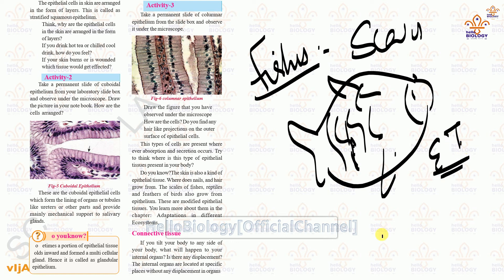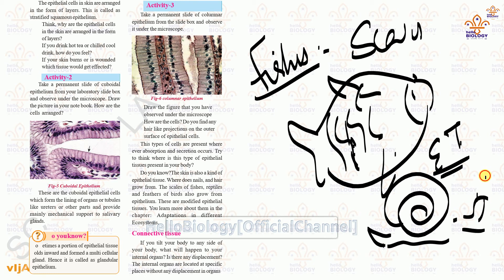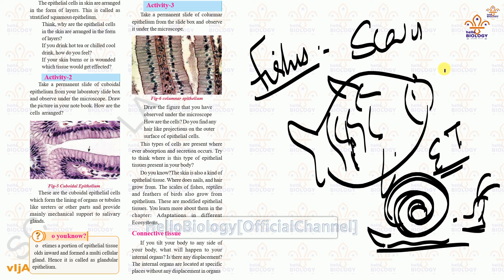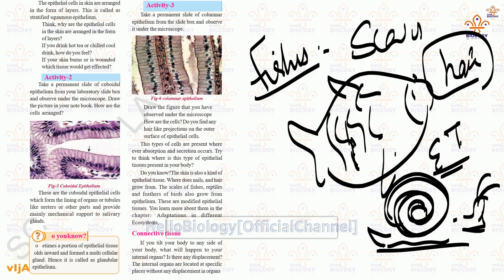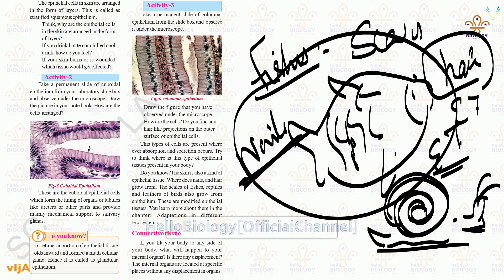Snails have a shell that is also made up of epithelial tissues. Human and animal hair is made up of epithelial tissues. Nails are also made up of epithelial tissue. These are important examples of epithelial tissue found in various organisms.